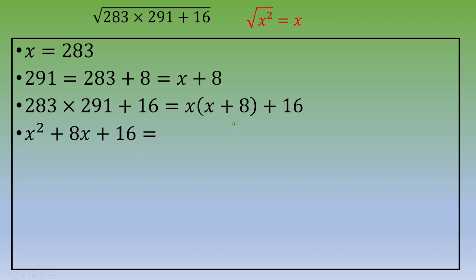You can rewrite now this quadratic polynomial as x squared. Instead of writing 8x, you can write 2 times 4 times x, and 16 is 4 squared.